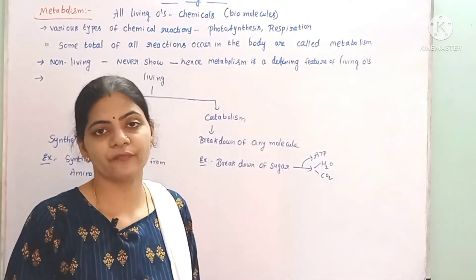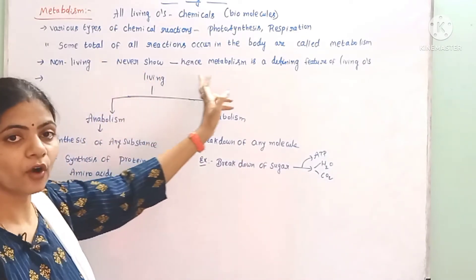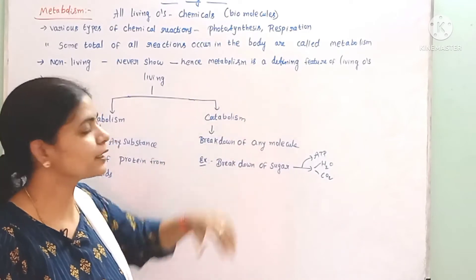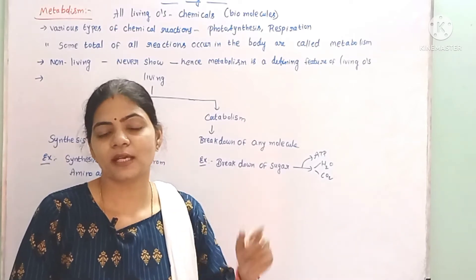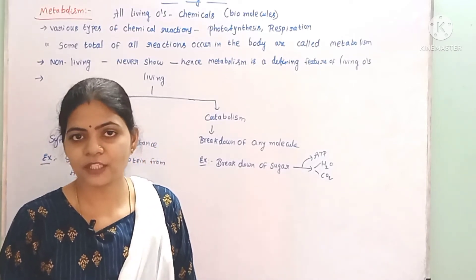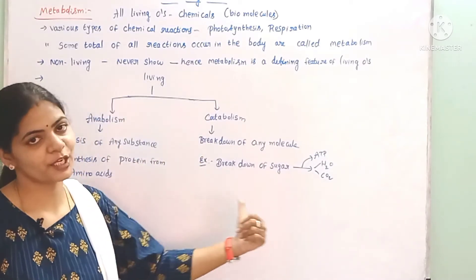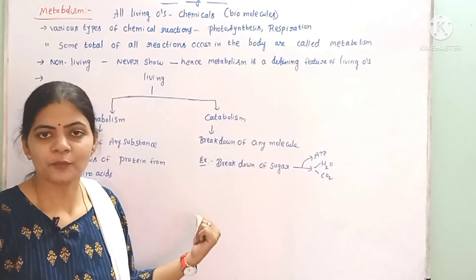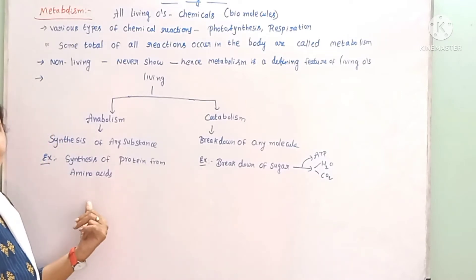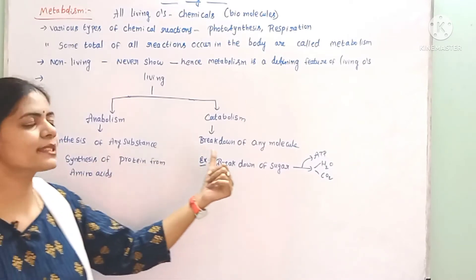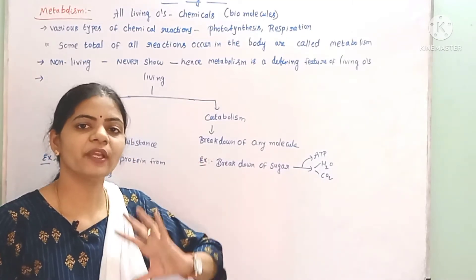The sum total of all chemical reactions occurring in the body of a living organism is called metabolism. Metabolism is of two types: anabolism and catabolism. Anabolism means the synthesis or formation of any substance or molecule, while catabolism is the breakdown of any substance.